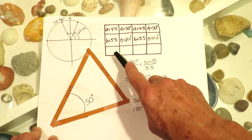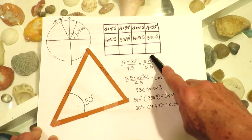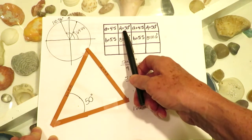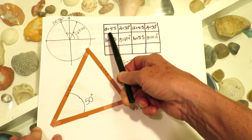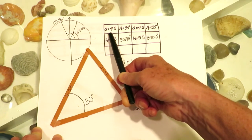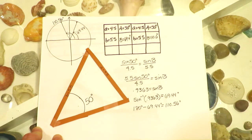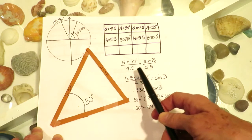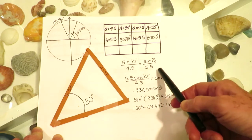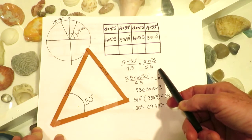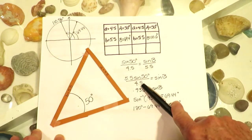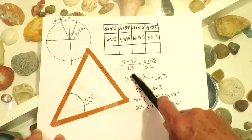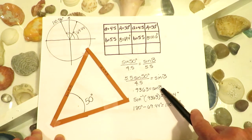Assuming there might be two possible triangles, the law of sines states that the ratio of the sine of an angle to its opposite side is always the same, no matter which angle you choose. So sine of 50 degrees divided by 4.5 should equal sine of B divided by 5.5. Multiplying both sides by 5.5, I get 0.9363, and that is equal to sine of B.